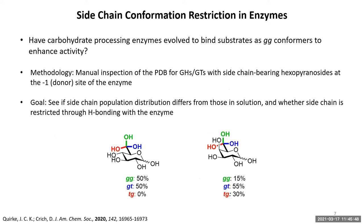The way we figured this out was by manual inspection of the Protein Data Bank through assistance with the Carbohydrate Active Enzymes database, or CAZy. We looked for crystal structures of hydrolases and transferases that have a hexapyranoside in the active site, or the minus-one site, that have a hydroxymethyl-containing side chain. We wanted to see how different the population distribution of the enzyme-bound ligands is from those in solution, and also to what degree these side chains are restricted through H-bonding. As a reminder: in the glucose series, we have 50% GG and 50% GT; in the galactose series, 55% GT, 30% TG, and 15% GG.